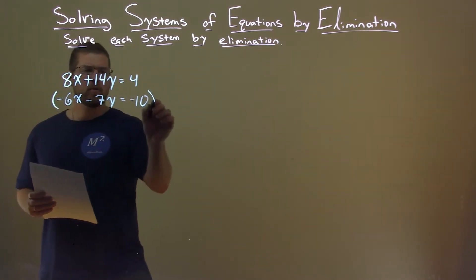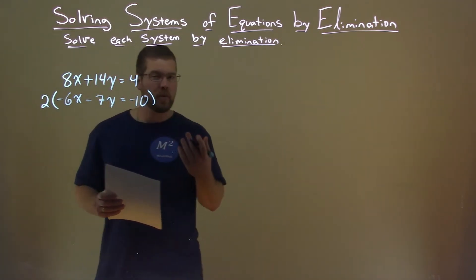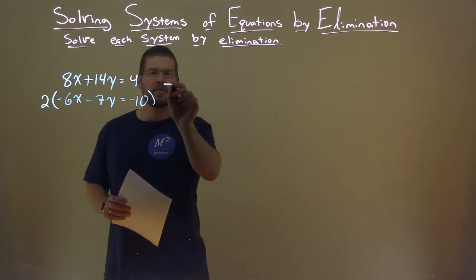Well, if I multiply the whole second equation by 2, I know this negative 7y will turn to a negative 14y and we'll cancel out the y's. So that's our goal.